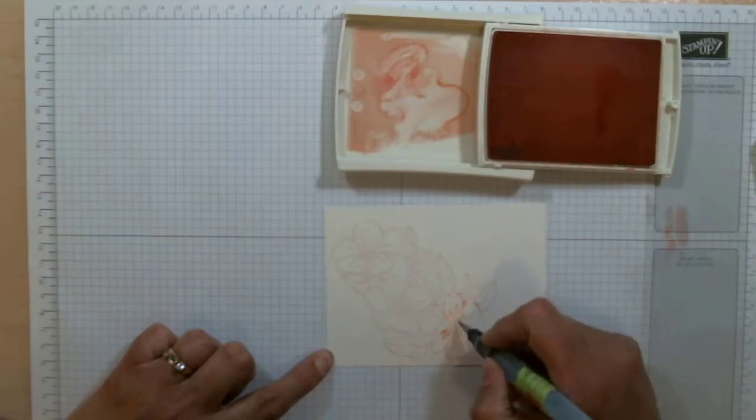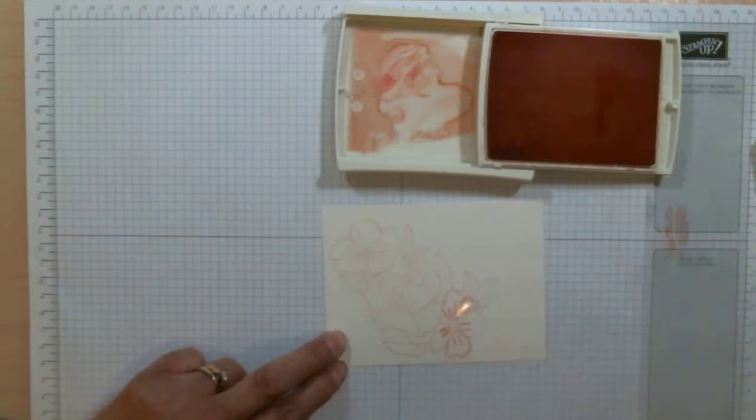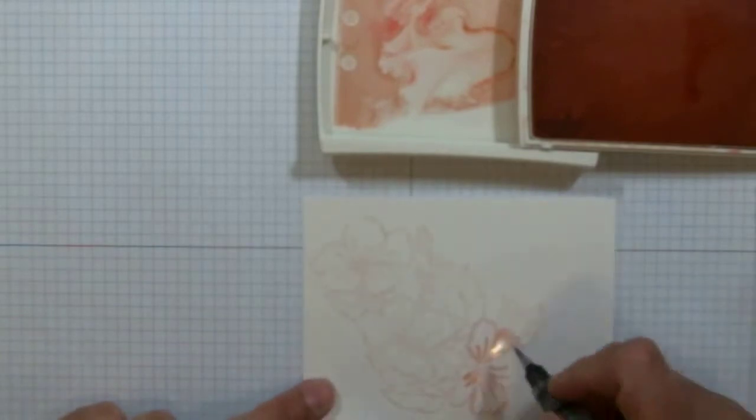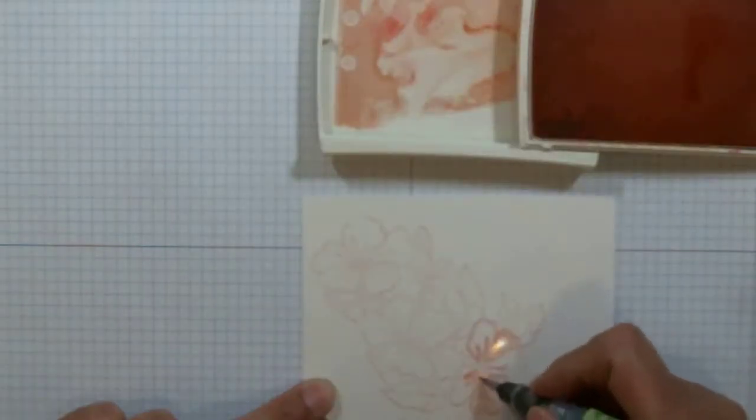You're going to work on every other leaf to begin with because the water is going to be a little bit wet, so you don't want the colors to run into each other. You can see how I've started with the outline and then I'm pushing the rest of the ink into the rest of the flower.